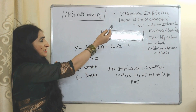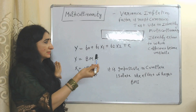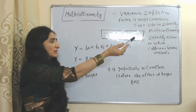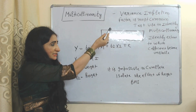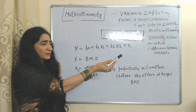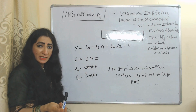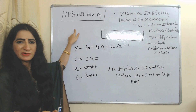The Variance Inflation Factor (VIF) is the most common test we use to identify the problem of multicollinearity. This test identifies the extent to which coefficients become unstable due to multicollinearity.